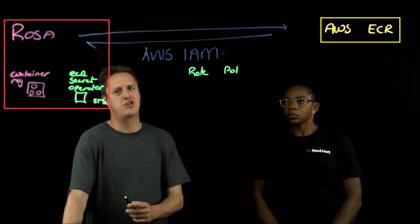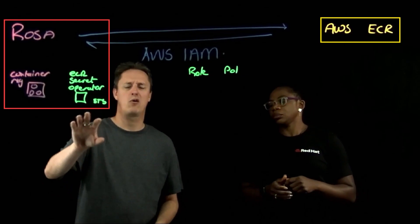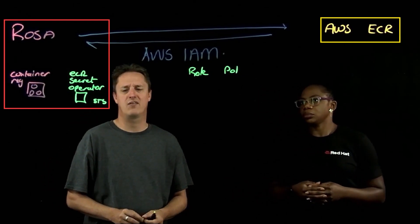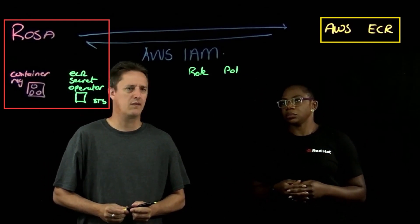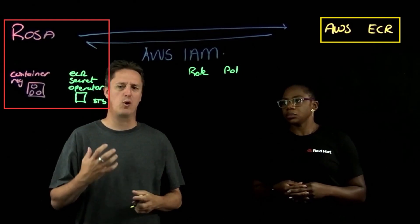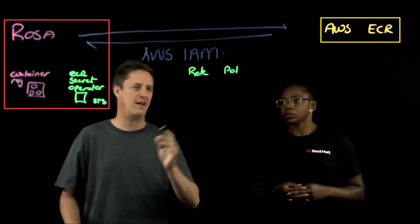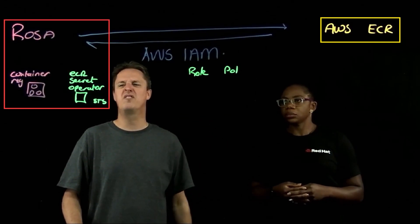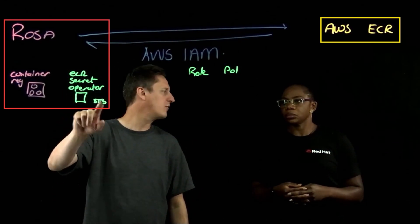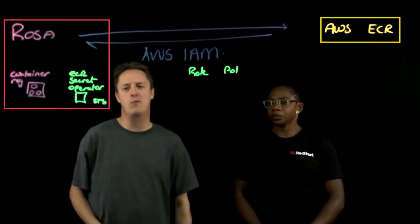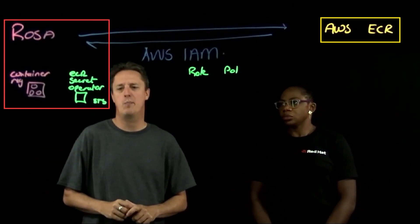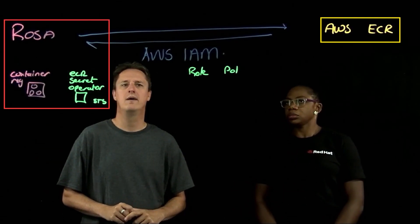The real magic for me is this ECR secret operator that Red Hat has created and it's really solving the problem of how do I automate updating that 12 hour cycle secret. In the past customers had to do this on their own. Now we've got a very simple operator coming into the effect here.